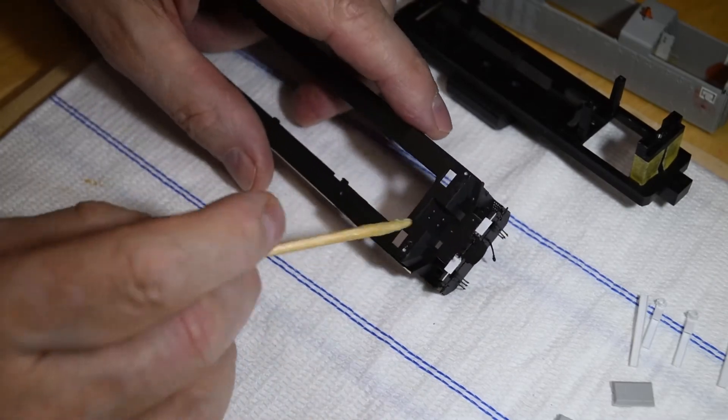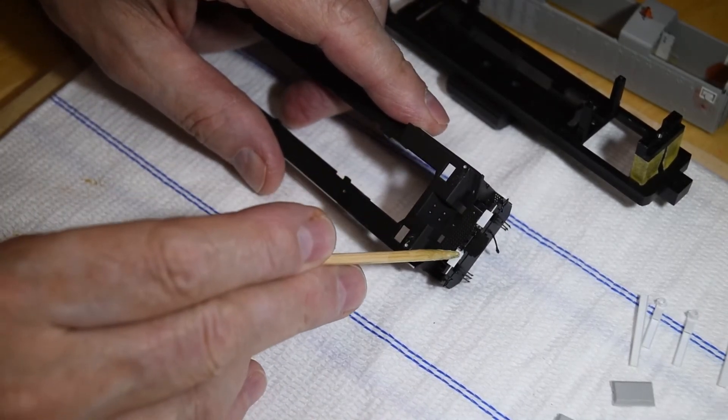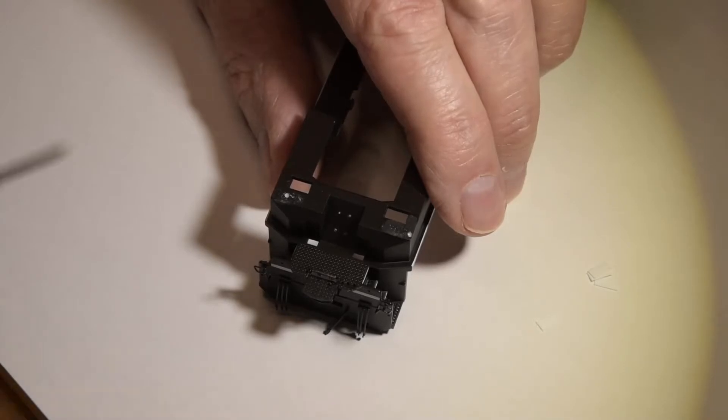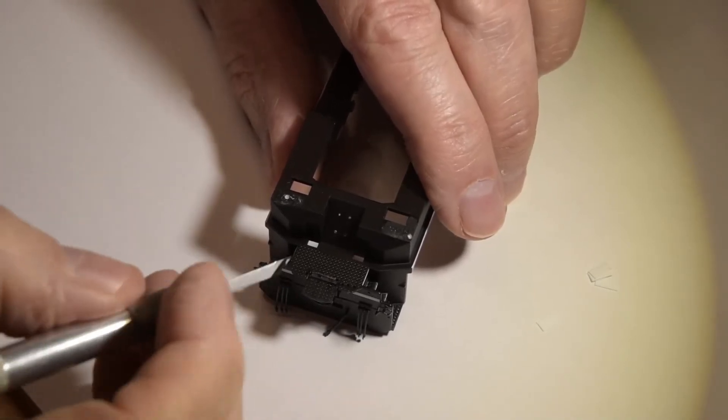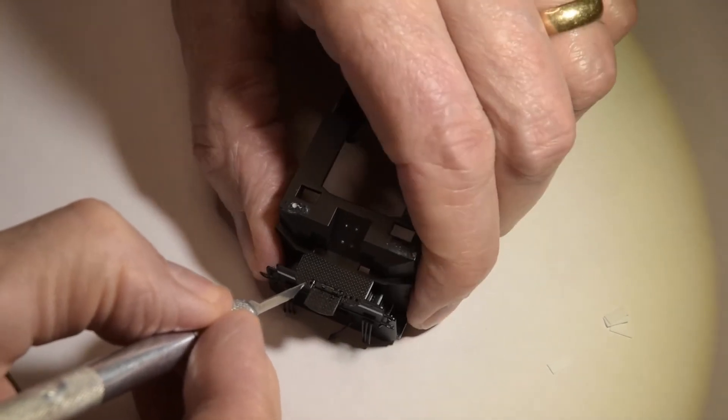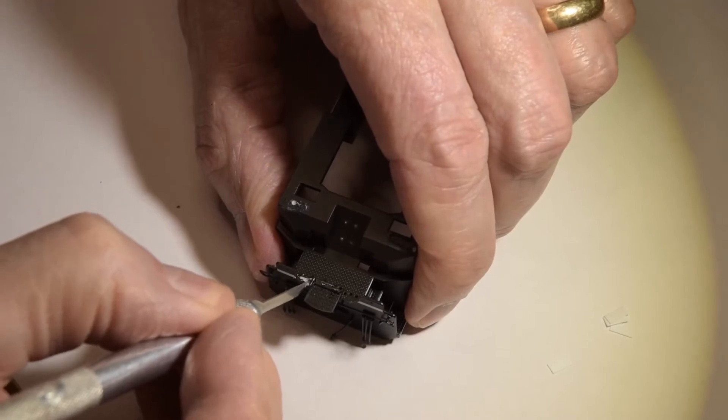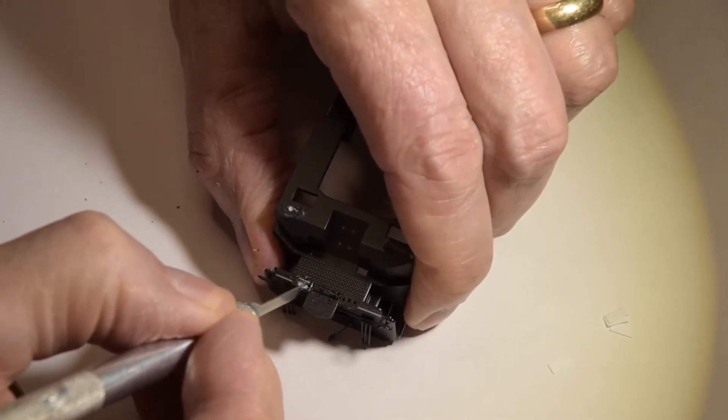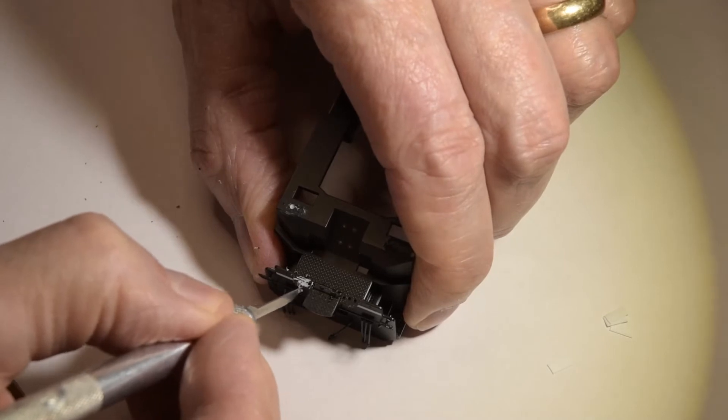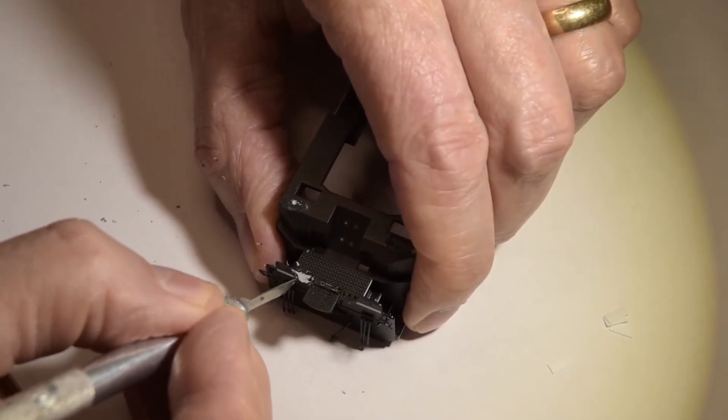Here's a little tip for those who may or may not know: when you're going to mount ditch lights and the pilot doesn't quite match up to accommodate the ditch lights, which is often the case, this can be done on just a stock locomotive that's already painted too if you just want to add them.